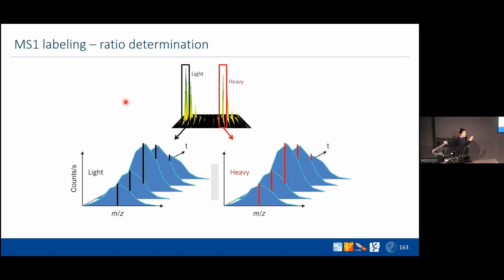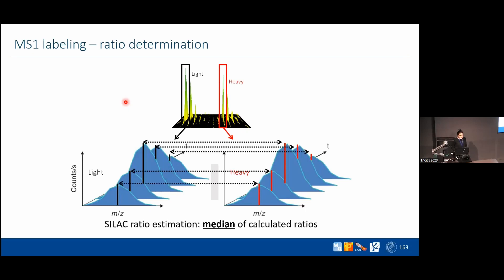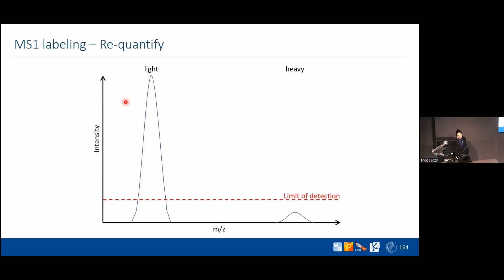So that's how we do it: point-wise ratio determination, then take the median of all those ratios. Another thing that can happen with MS1 level labeling is that you can have only the light or only the heavy in your results. This can happen for different reasons: a biological reason where your peptide is only in one sample, or because the feature in either the light or heavy channel is under the noise — out of the dynamic range, or inside the dynamic range but with a signal too low for MaxQuant to detect.